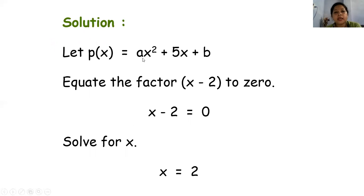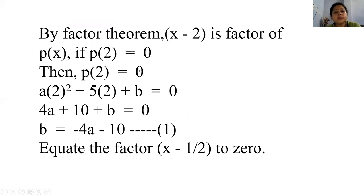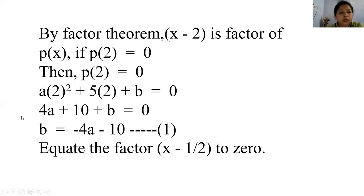तो इसका solution है: p(x) हमें दिया है ax² plus 5x plus b. Equate the factor x minus 2 to 0 — इसको 0 के equal करके x की value find करेंगे: x minus 2 equal to 0, solve for x, x equal to 2. फिर by factor theorem, x minus 2 is a factor of p(x) if p(2) equal to 0. p(2) हमारा remainder है. तो x की value 2 put करेंगे: a into 4 plus 5 into 2 plus b equal to 0. So 4a plus 10 plus b equal to 0, therefore b equal to minus 4a minus 10 — यह first equation हो गई हमारी.